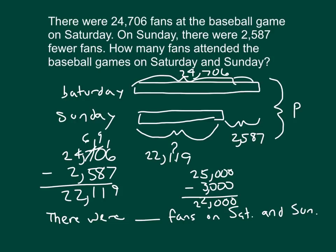What I still have not done yet, though, is now that I know my attendance for Sunday and my attendance for Saturday, I can figure out what P is, which will be the sum of Saturday's attendance and Sunday's attendance. And you'll notice that those two numbers, they should be 2,587 away from each other. Nine plus six is fifteen, five regroup of one, one plus one is two, seven plus one is eight, four plus two is six, and two plus two is four. So, there were 46,825 fans on Saturday and Sunday.